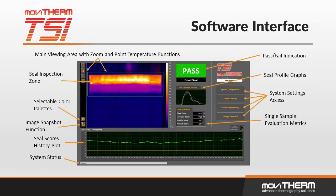This is another example of the TSI interface. In this example, we are inspecting pouches. The residual heat from the sealing process is clearly seen in the IR image.